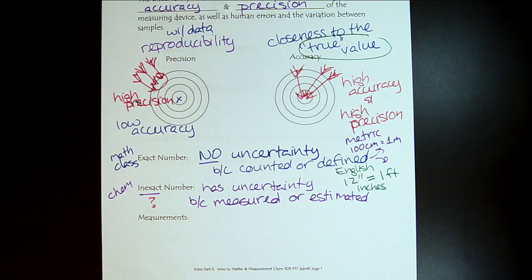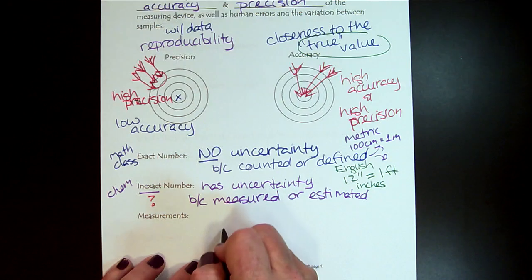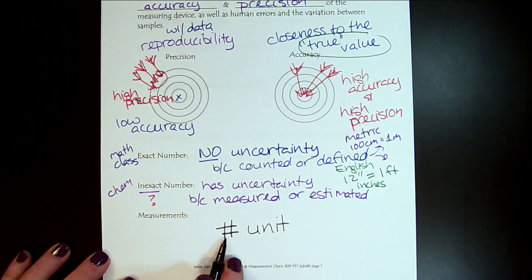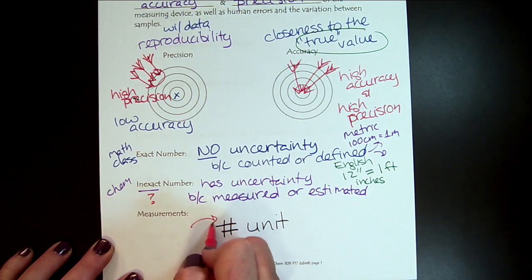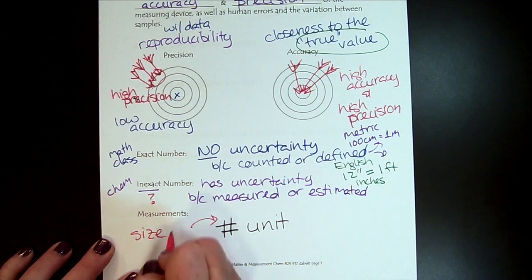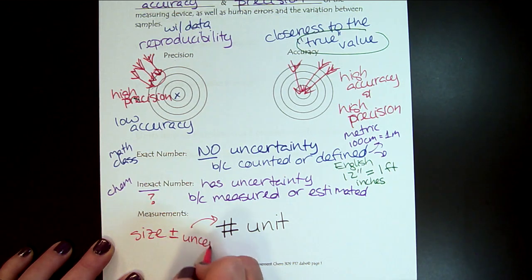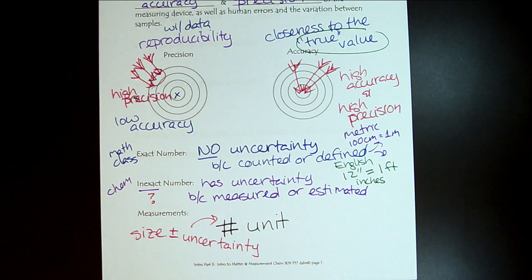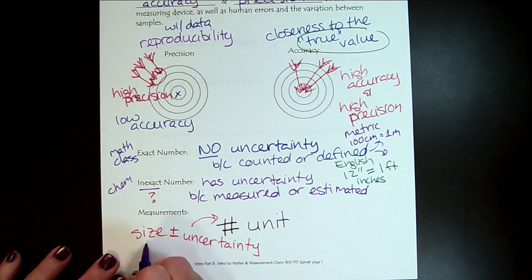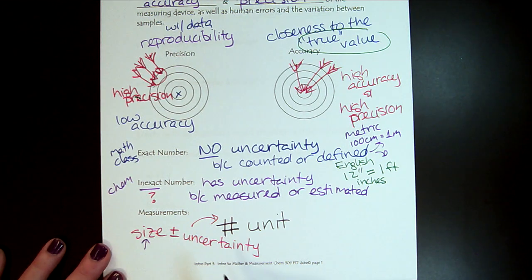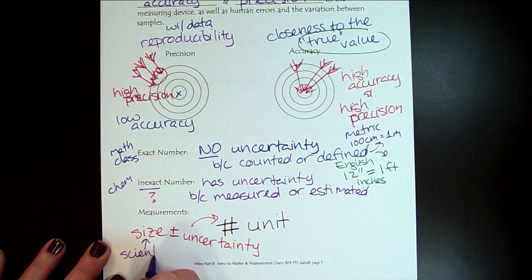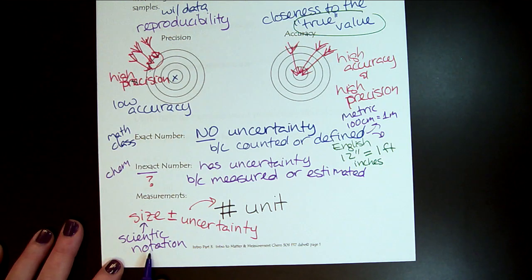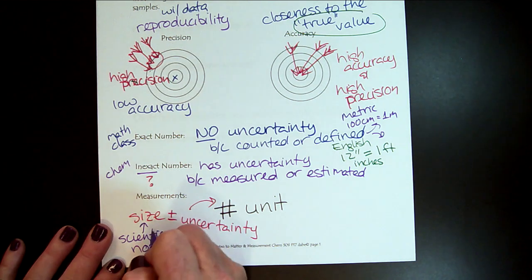You're going to watch a bunch of videos before the next class, because we've got to learn more about measurements. Every measurement is going to have a number — a size: is it big, is it little, is there a lot, is there a few? But we know there's also going to be an uncertainty in that number because we have to make some guesses. Chemistry looks at all of the universe, so some numbers will be huge, some will be small, some will be kind of normal. So we've got to make sure that we can do scientific notation with our calculator. Between now and the next class, make sure you're on your game with scientific notation.